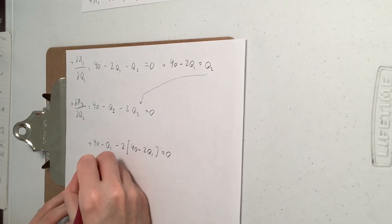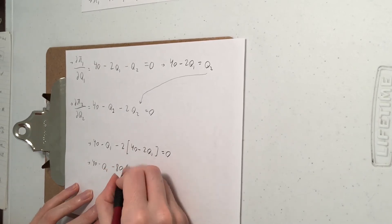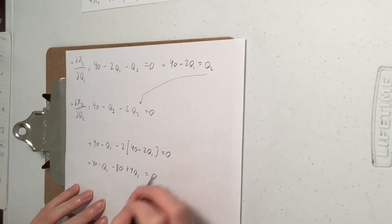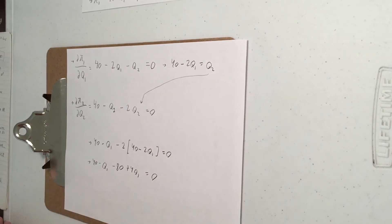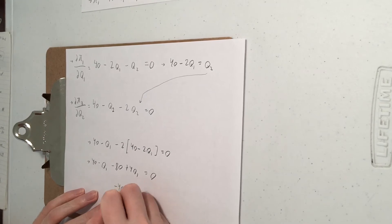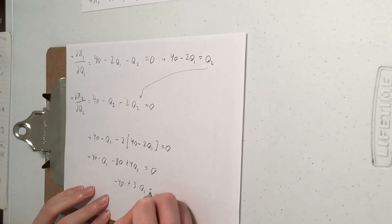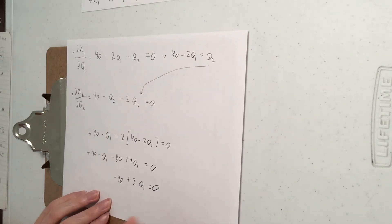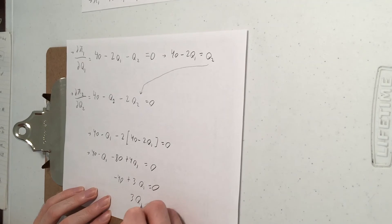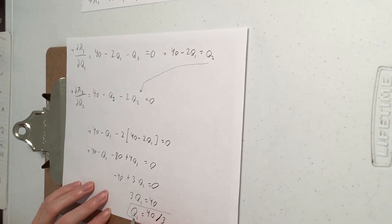Let's expand. And now we will combine some like terms. So the Q1s go together. The constants also go together. Minus 40 plus 3Q1 equals 0. 40 goes over there. So Q1 is going to be 40 over 3.